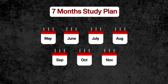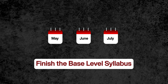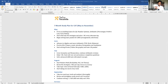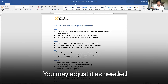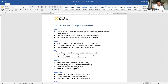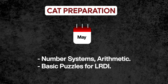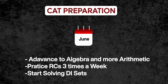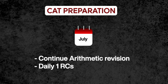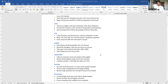This word doc covers the study plan from May to November. May, June, and July are the three months where you only focus on preparation and don't give any mocks. I've segregated different chapters you could pick up every month — you can change it according to your needs. For example, in May you start with Number System and Arithmetic; in June you move to Arithmetic and chapters like TSD, Time and Work, and Mixtures; in July you continue with Arithmetic revision, then move on to Geometry and Mensuration.